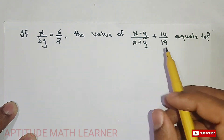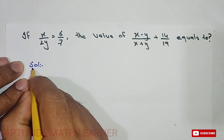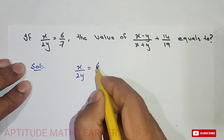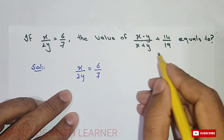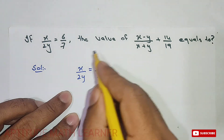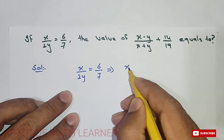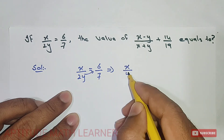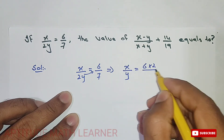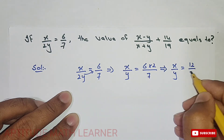Let's start with the solution. We have x upon 2y equals 6 upon 7. The first thing we need to do is find the value of x and y. So this two goes upward, and it becomes 6 multiplied by 2 upon 7. We get the value for x upon y that is 12 upon 7.